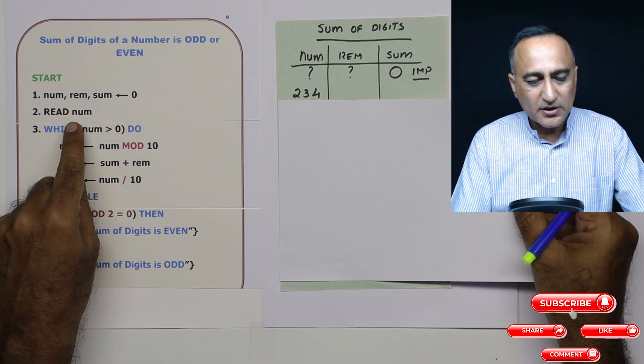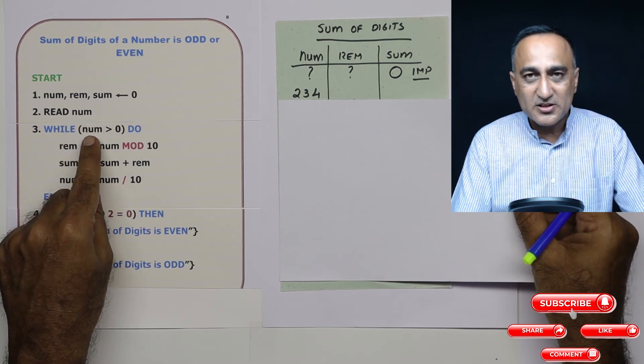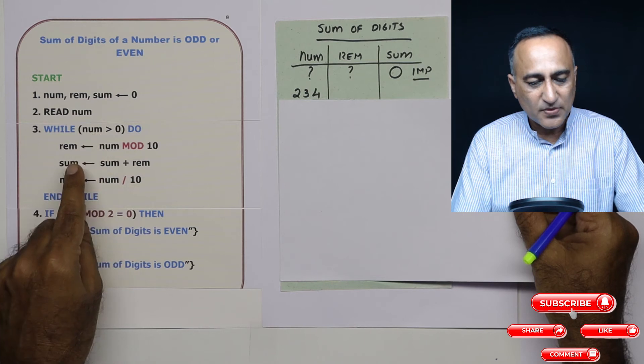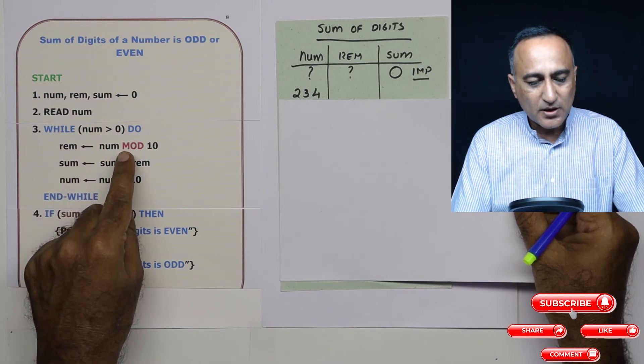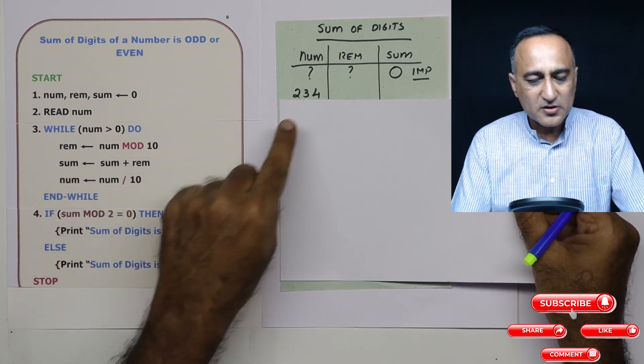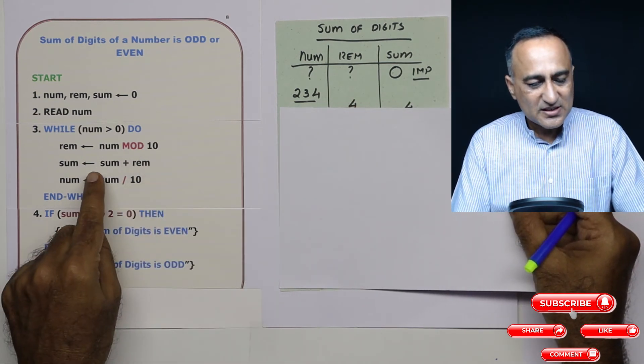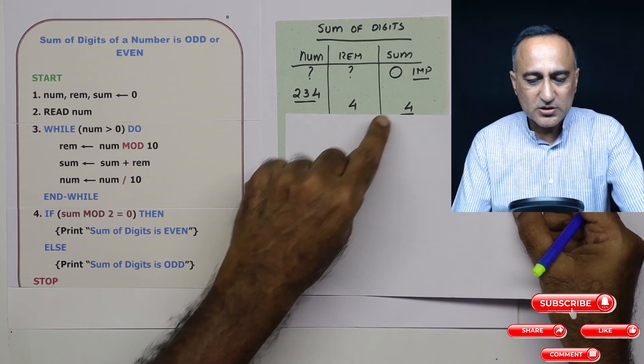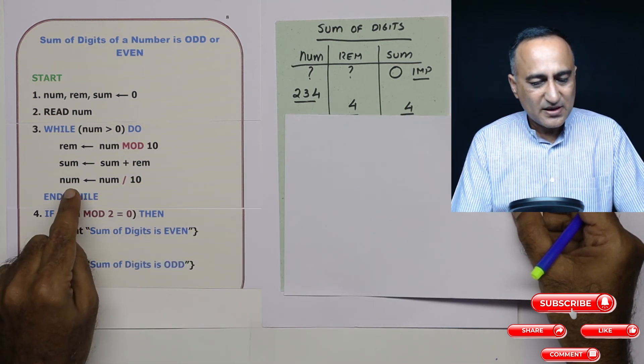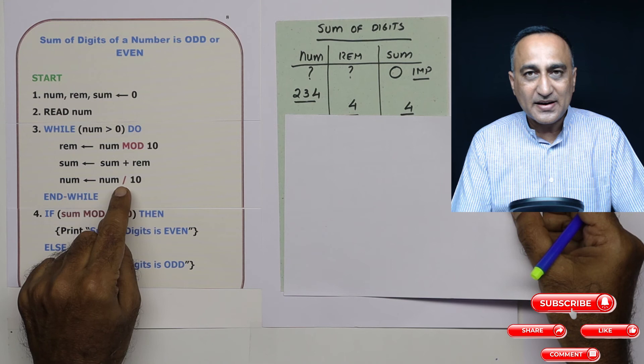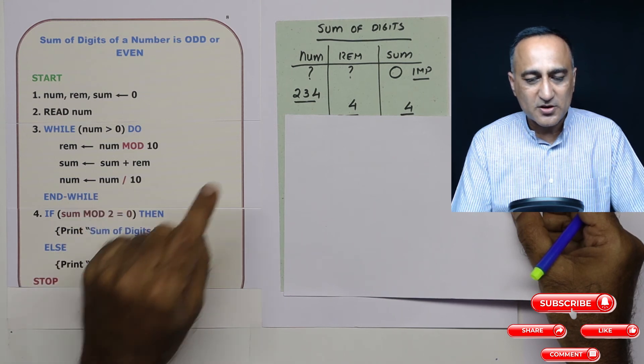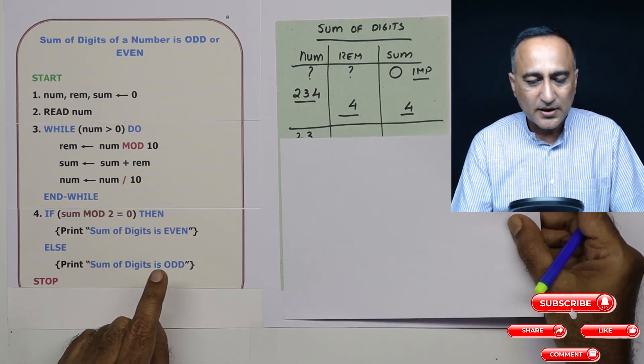So I read a number, number is 234. Is 234 greater than zero? This condition is true. Now 234 divided by 10, the remainder is going to be just four. So remainder is four, then sum is zero plus four, so sum is also four. Now number is 234 divided by 10. This is a whole number division, so only 23 is going to remain.